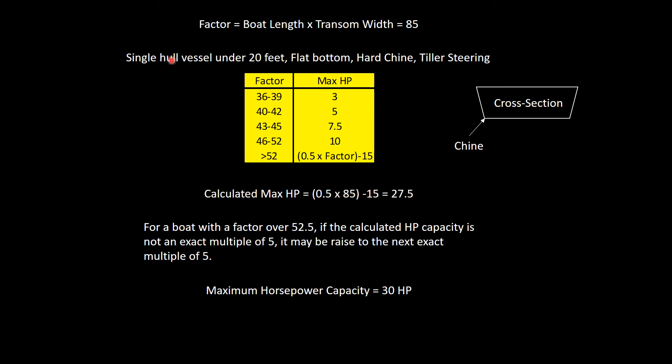Our boat factor is 85. Now, for single hull vessels under 20 feet with a flat bottom, if this is a cross section of our boat, we know we have a flat bottom side to side. And if the boat has a hard chine, which we do, it means there's a sharp corner here where the bottom transitions to the side panels. That's the chine of the boat. Remember, our chine logs go along there. And it's a sharp chine, or also known as a hard chine.